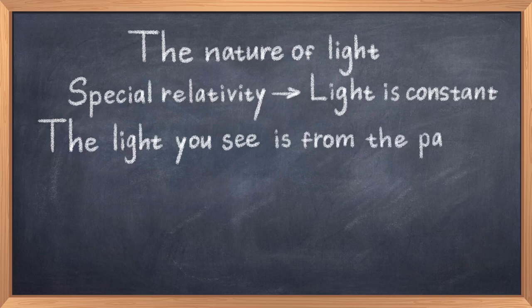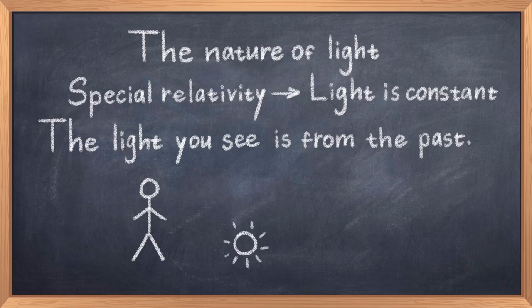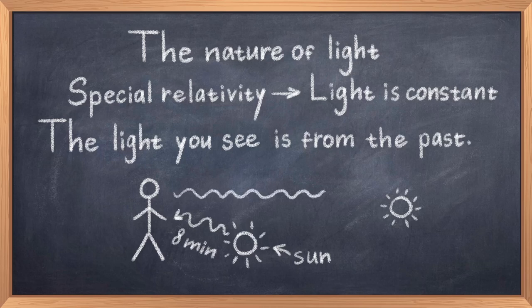As an example, it takes a bit more than 8 minutes for light from the sun to reach Earth. Thus if you look at the sun, you are not looking at how it looks now, but rather how it looked around 8 minutes ago. If you look further away to the nearest star outside our solar system, Alpha Centauri, then this light is around 4 years old.